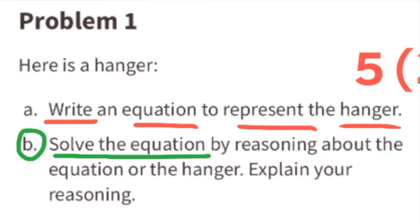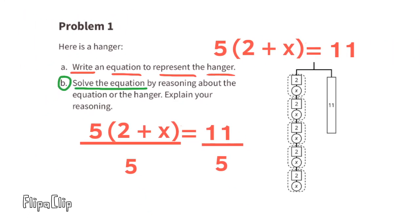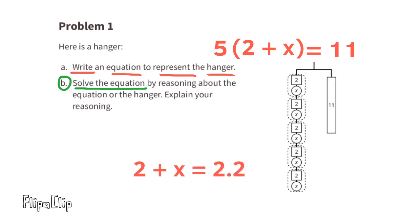Part b: Solve the equation by reasoning about the equation or the hanger. Explain your reasoning. The first step would be to divide both sides of the equal sign by 5. On the left side, we're left with 2 + x, and on the right side of the equal sign, we're left with 11 over 5, or 11 divided by 5, which is 2.2 or 2 and 2 tenths.